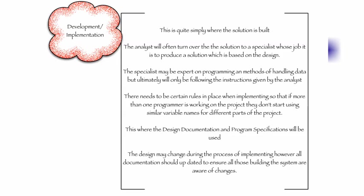There needs to be certain rules in place when implemented so that if more than one programmer is working on the project, they don't start using similar variable names for different parts of the project. This is where the design and program specifications will be used. And that's why it's important that you have the design phase, because if you have a number of people working on a program, you have to ensure that everyone is working towards the same solution and using consistent variable names and other parts of the project.